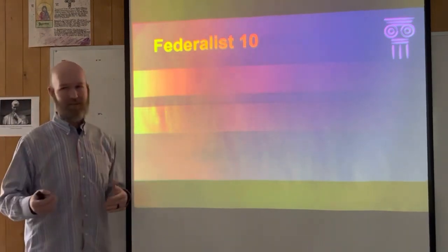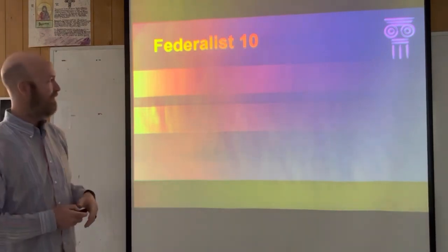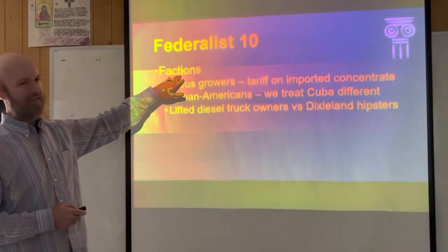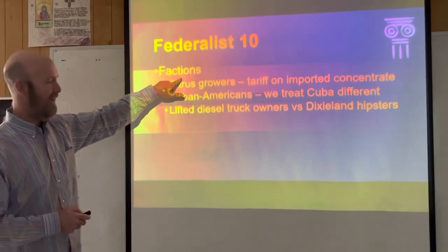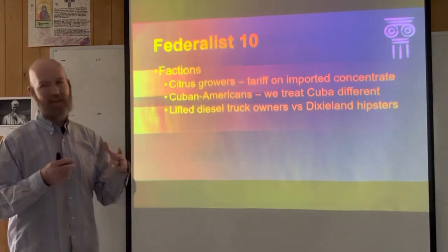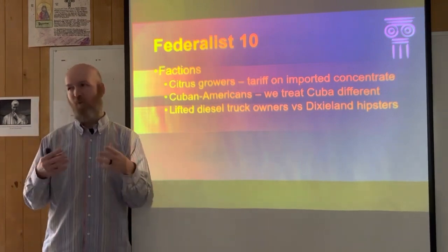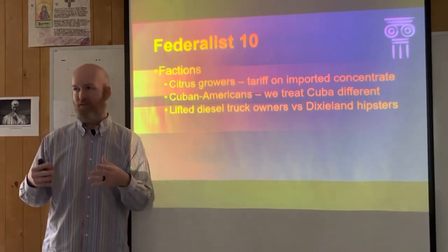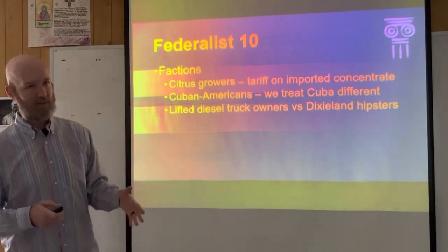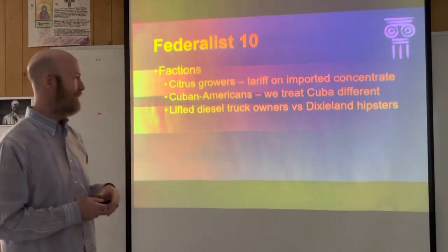The first one we're going to talk about is Federalist Paper 10. Federalist Paper 10 deals with the issue of factions. Factions are small groups of people who are united around some common interest, and they want the government to support their interest, even if it goes against other groups' interests. They care about their group, not other groups.